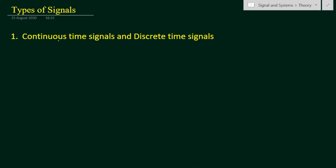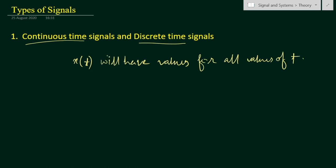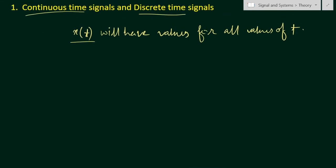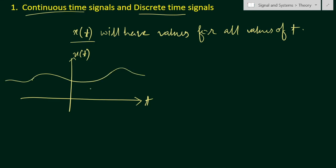Depending on continuity, we can divide signals into two types: continuous time and discrete time. For any continuous time signal x(t), it will have values at any given instant of t. So for x(t) to be a continuous time signal, x(t) should have values for every value of t. In graphical representation, we have t along the x-axis and x(t) along the y-axis.